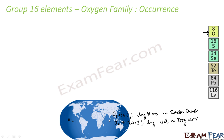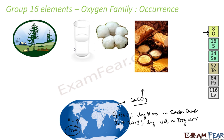Oxygen is also available in the combined state. All the oceans — water — have oxygen. Lots of rocks we see are carbonates, for example calcium carbonate, which has oxygen. Cotton also has oxygen. Carbohydrates — normally found in wheat and bread — also have oxygen. So air and water both contain oxygen.